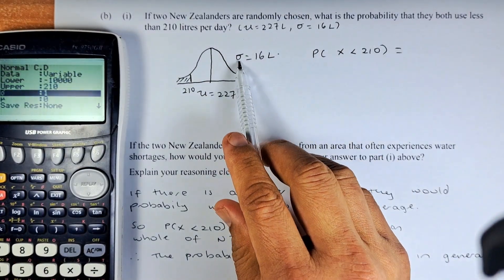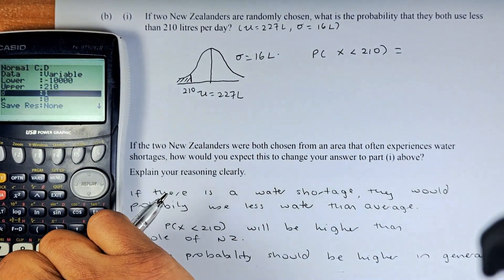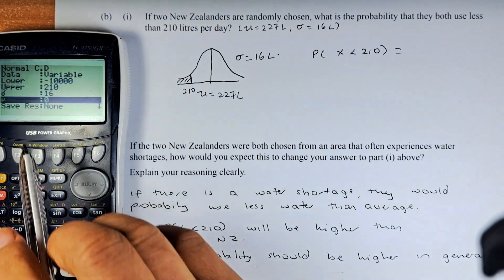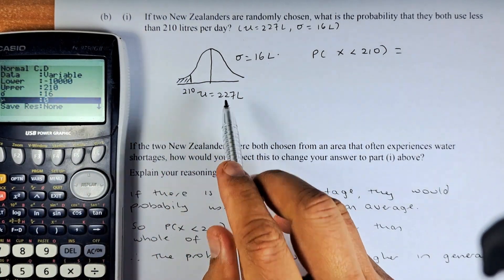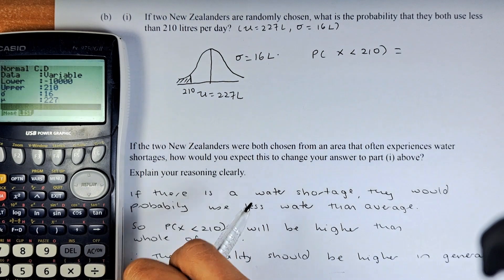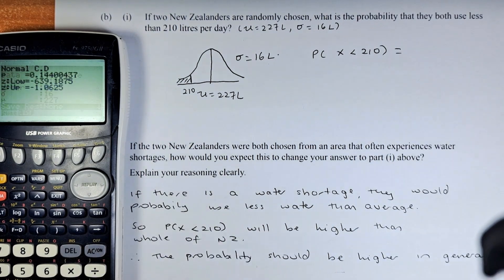Sigma is the standard deviation, which is 16. And last but not least, mu is the mean, which is 227. Once you have done that, press the execute button.